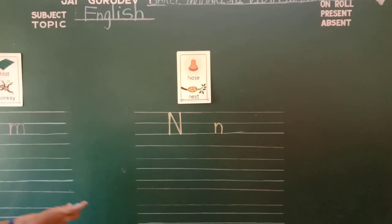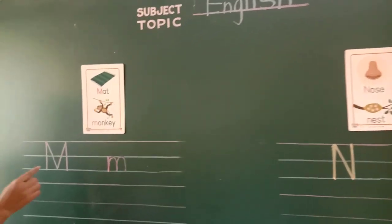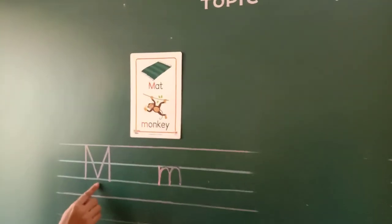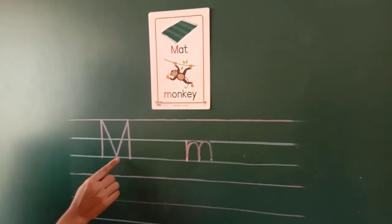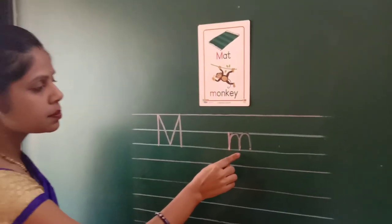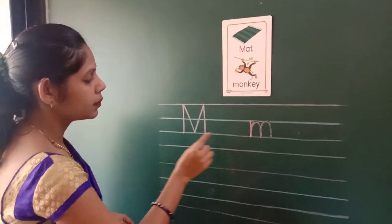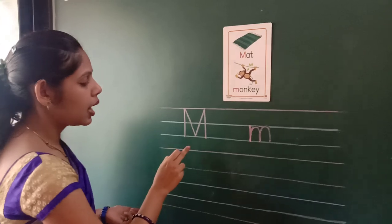So let's hold your pencil. On the very first line, write down capital M, small m, capital M, small m.